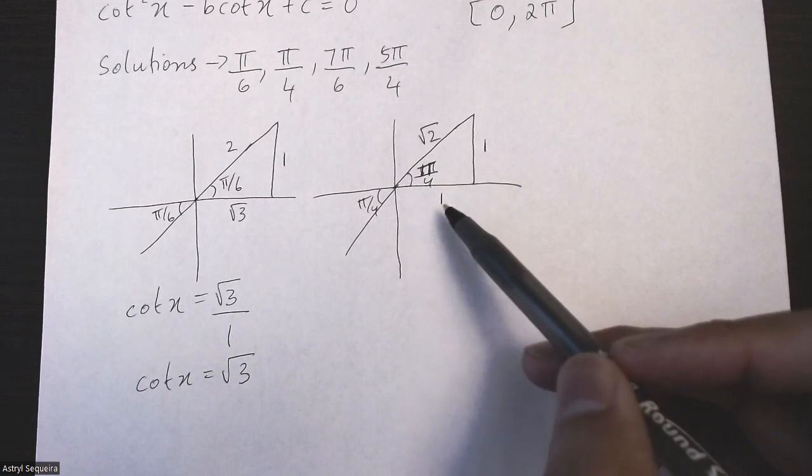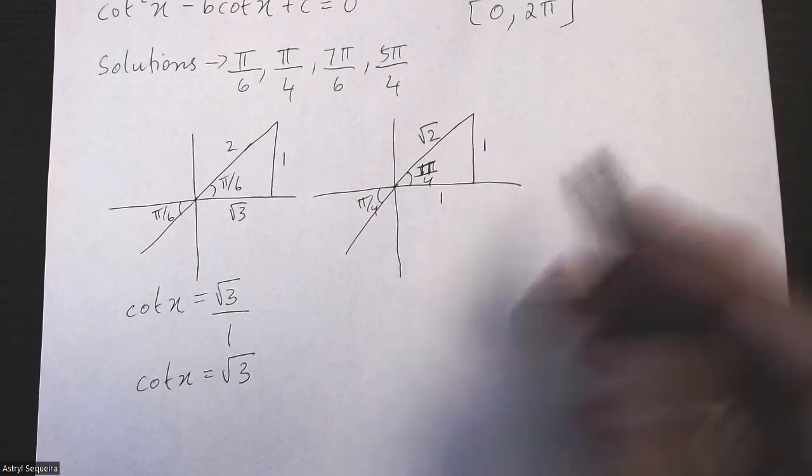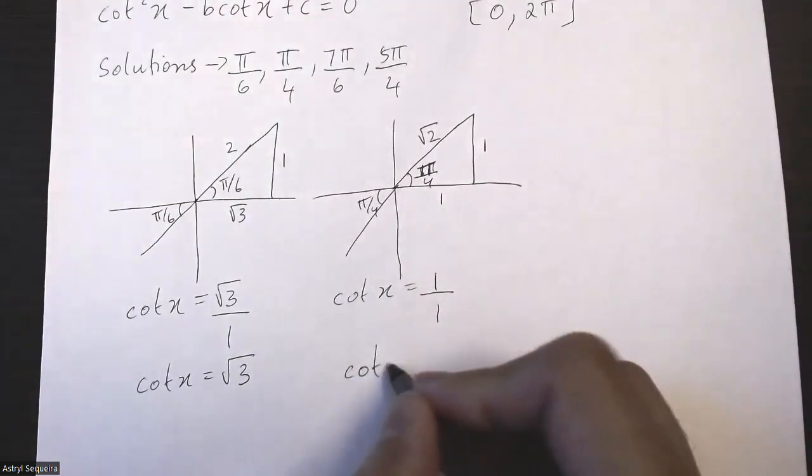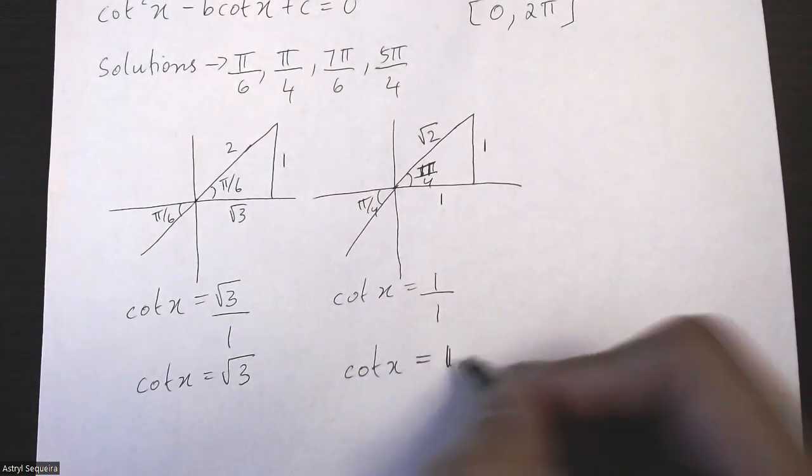For the second triangle, cot of x is adjacent over opposite, so cot x equals 1 divided by 1, which means cot x just equals 1.